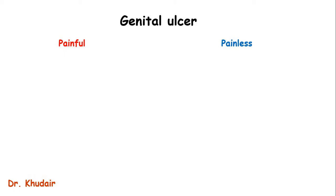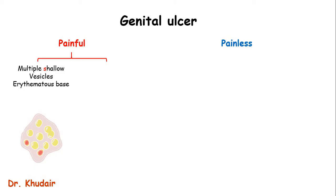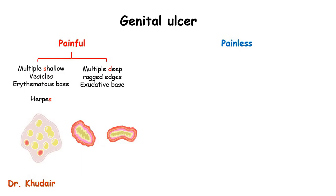Genital ulcers can be divided into painful and painless ulcers. Starting with the painful: if there were multiple shallow vesicles that ulcerate to expose an erythematous base, this is herpes. So shallow vesicles equals herpes.